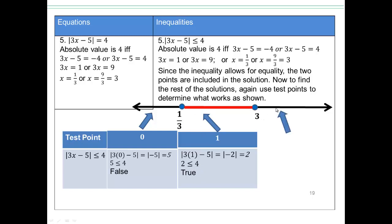Pick a number above 3, say 4. And false. 7 is less than or equal to 4 is false, so this is not part of the solution. So, this is your solution.